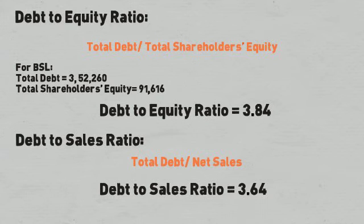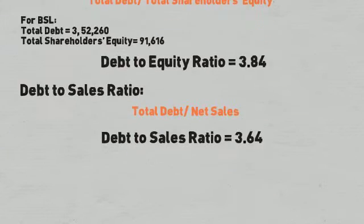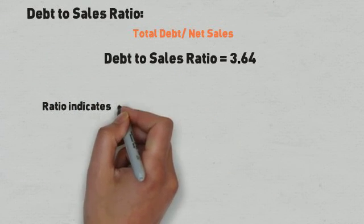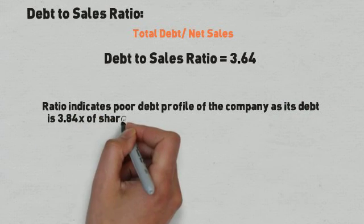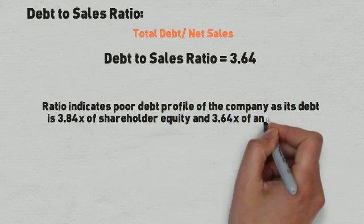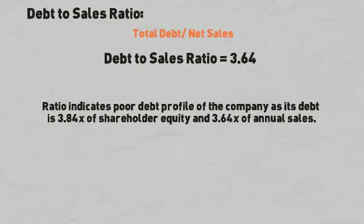Debt-to-sales Ratio is calculated by dividing the company's total debt by net sales. For Bhushan Steel, Debt-to-sales Ratio is 3.64. Leverage Ratios indicate a poor debt profile of the company as its debt is 3.84 times shareholder equity and 3.64 times annual sales.